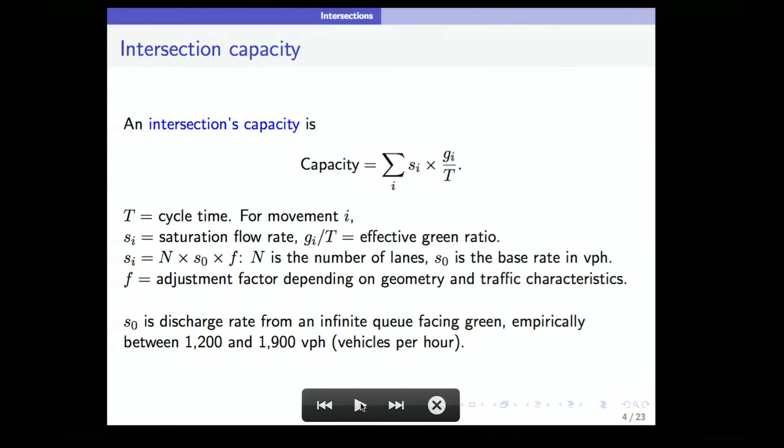Let me talk about intersection capacity. The intersection capacity is defined as: Capacity = sum over i of (qi/T) × (Gi/T). T is the cycle time, Gi is the amount of green time devoted to movement i, qi is the saturation flow rate for that movement—that is, if that movement had an infinite queue and was staying green all the time, what is the number of vehicles that would go through. So the capacity is the saturation rate multiplied by the fraction of time that movement is getting green.